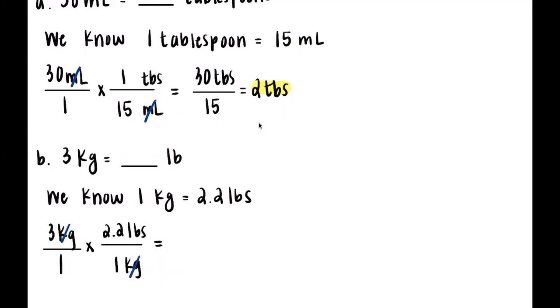Now we're left with the multiplication of 3 times 2.2 and 1 times 1. Let's go to the side and multiply.